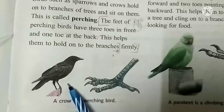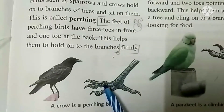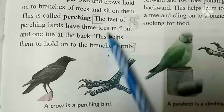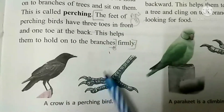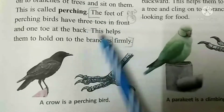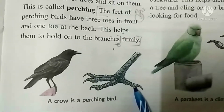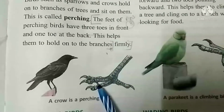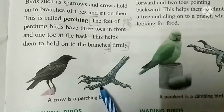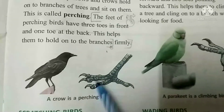Crow perching birds hote hain. Iske saamne mein three toes hote hain aur back side mein one toe hota hai. Yeh tree ke branch ko pakadne mein, pakad ke baithne mein birds ko madad karte hain.